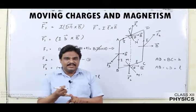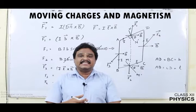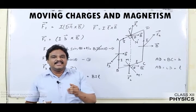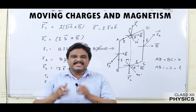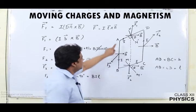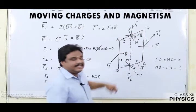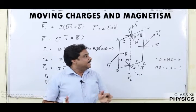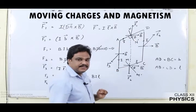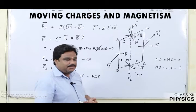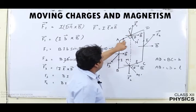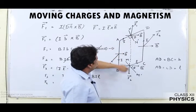F1 and F2 are equal in magnitude, opposite in direction with the same line of action — they cancel. F3 and F4 are equal in magnitude, opposite in direction, but have different lines of action, so they give rise to a torque and the loop starts rotating in the magnetic field. Our aim is to find the torque on a current loop placed in a magnetic field. The normal to the plane of the coil makes an angle theta with the magnetic field.